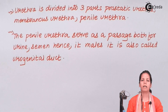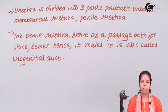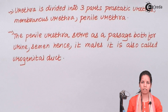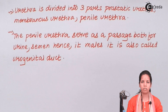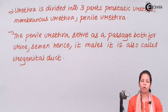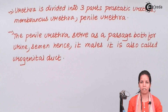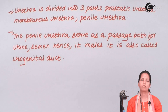So students, in this part of the chapter we studied about urethra — how it differs in males and females, how in males it serves as a passage for both semen and urine while in females that doesn't happen, and the differences in size between males and females. I hope you are all very clear about this concept. Thank you.